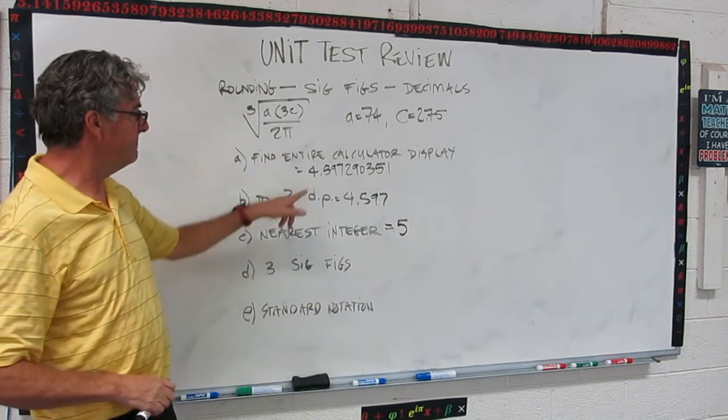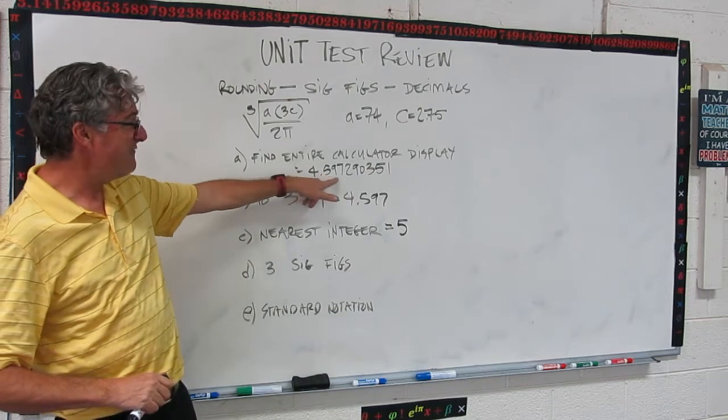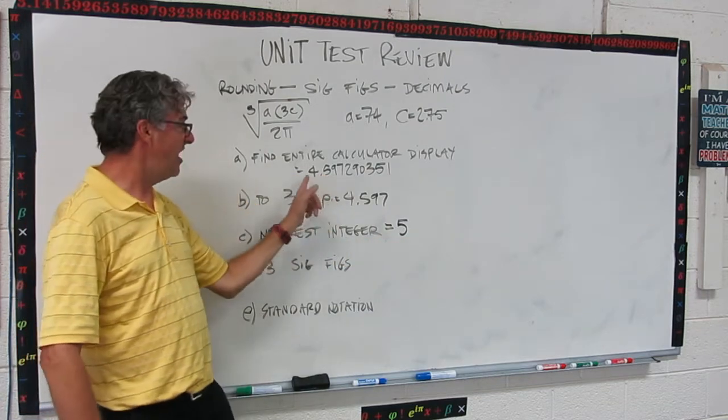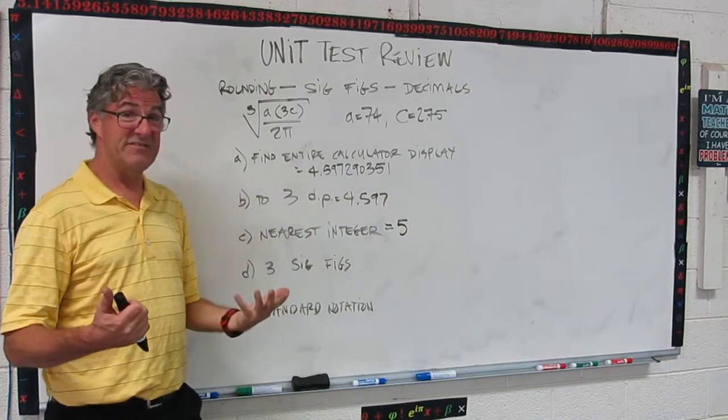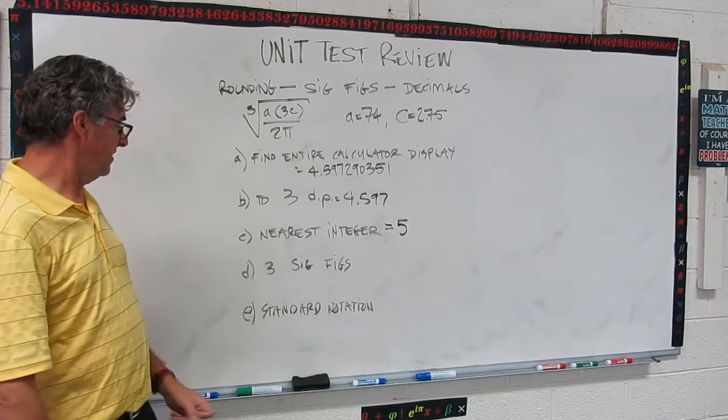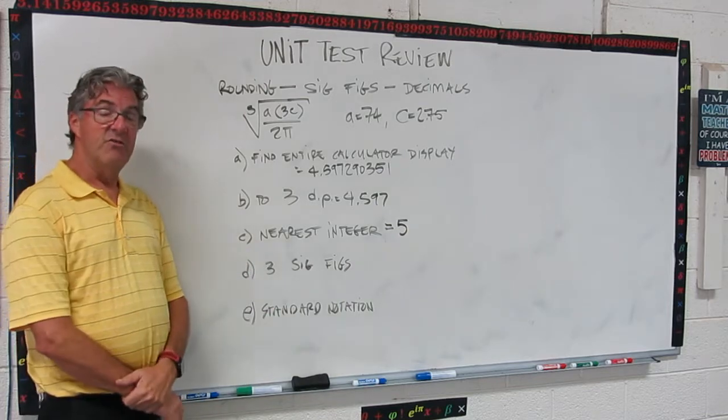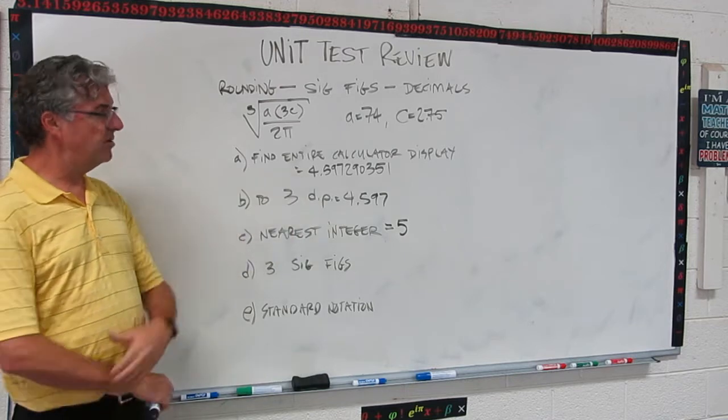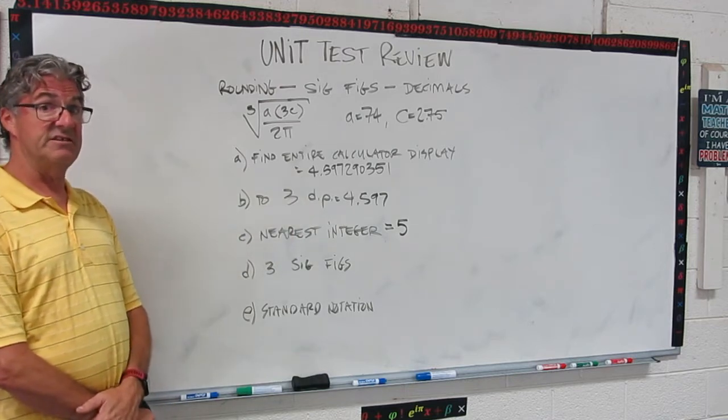Now that might feel a little weird because this is really four and a half-ish, maybe almost 4.6. Rounding it up to five is losing a lot of what I think is valuable information, but you might get that request to the nearest integer. Third, round it to three sig figs. So take a look at this big number and round it to three significant figures.